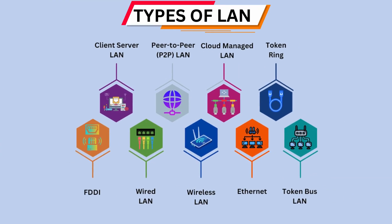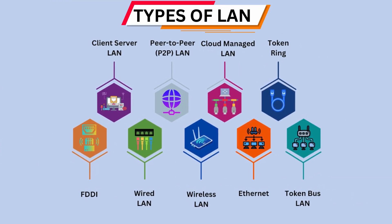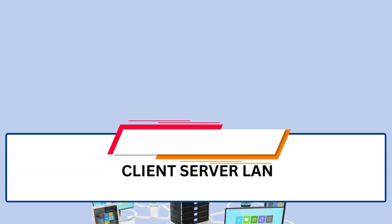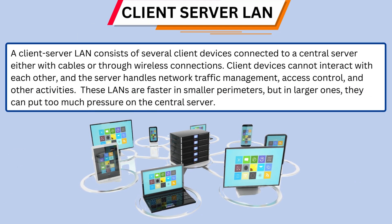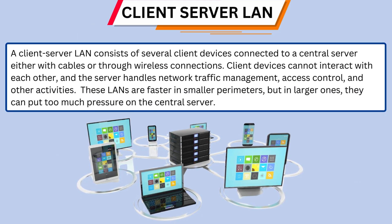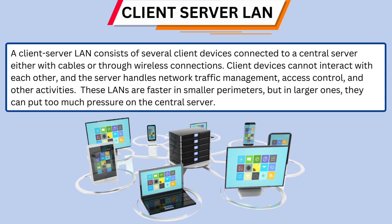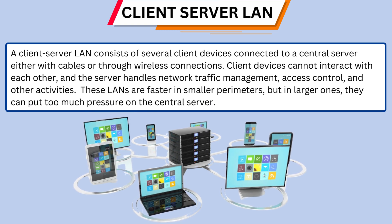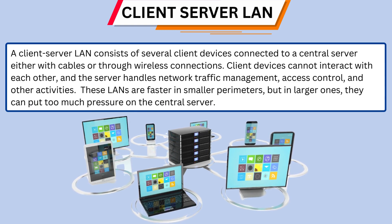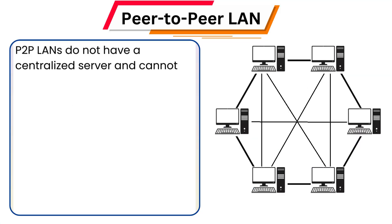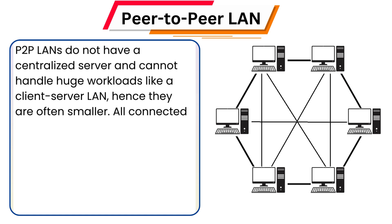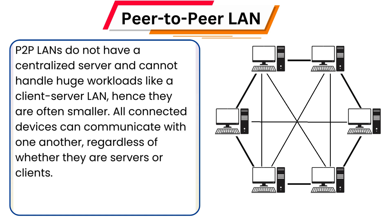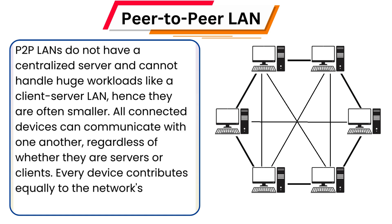There are different types of LAN. A client-server LAN consists of several client devices connected to a central server, either with cables or through wireless connections. P2P LANs do not have a centralized server and cannot handle huge workloads like a client-server LAN, hence they are often smaller.